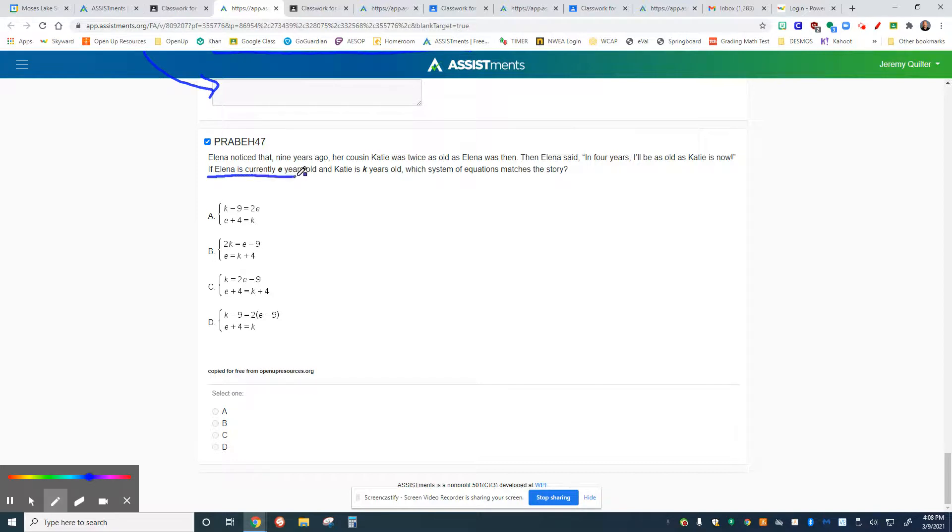Elena is currently E years old. So E is going to represent Elena, and Katie is currently K years old. So E is the number of years Elena has been alive. K is the number of years Katie has been alive. And we need to recognize which one represents the stories. So we're doing this right here.